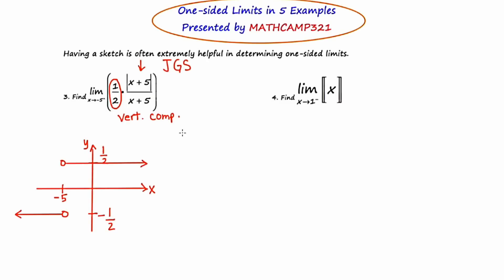Now that we've got the graph in place, the question will just take a matter of seconds to answer. We've got to find negative five on the graph, and we have a choice of looking up or looking down. Generally this would cause a problem, except that they're specifying approach from the right because of that little plus there. So I'm going to approach from the right, getting closer and closer. And even though this is an open circle, the y values are approaching or hovering at a consistent one half.